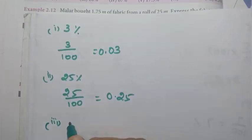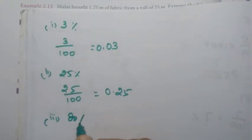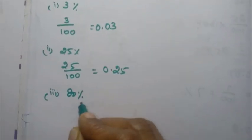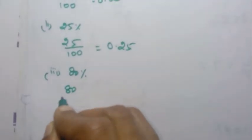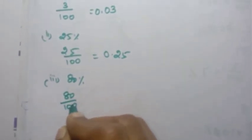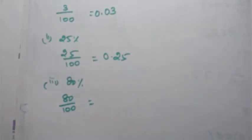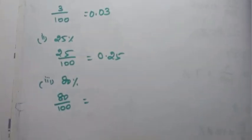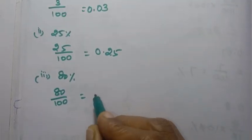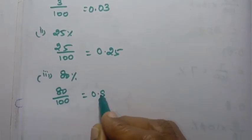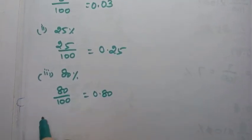3rd one: 80 percentage. 80 by 100 equal to. 80 by 100. 0.80 decimal.